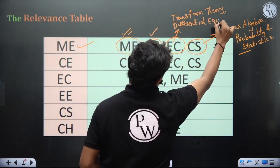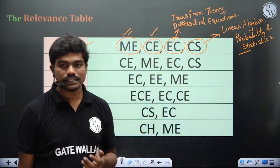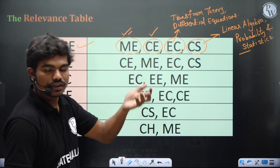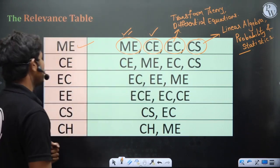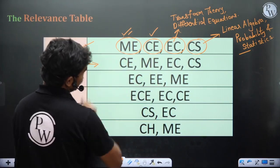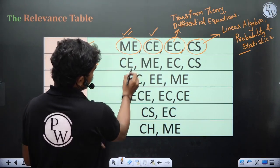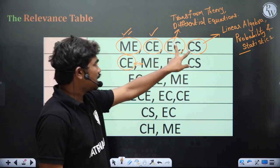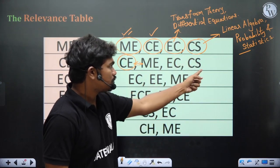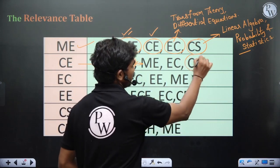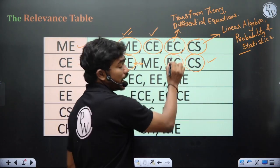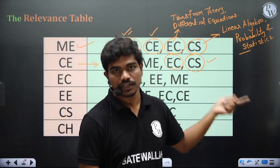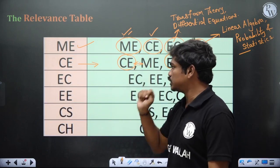Transform theory and differential equations you can find in EE/EC, and these two have strong syllabus overlap — except for complex calculus, there's no variation between their syllabi. Coming to civil engineering, you must solve civil PYQs first, and then look at mechanical since there's strong overlap. Because linear algebra and probability questions are strong in CS, I suggest following CS PYQs for those two chapters. For transform theory, differential equations, and especially partial differential equations — topics like diffusion equations, wave equations, and Laplace equations — mechanical has very strong relevance with civil.